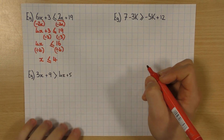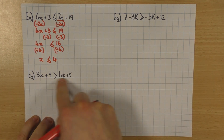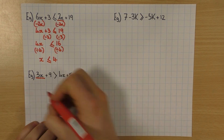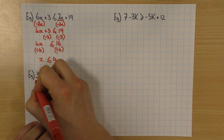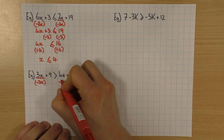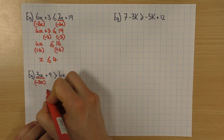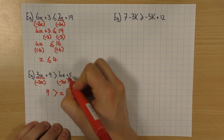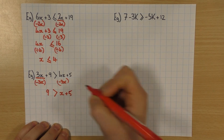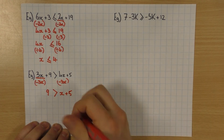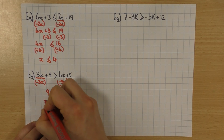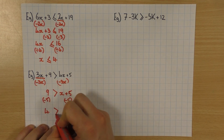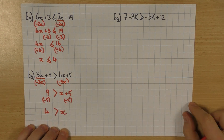The process is still exactly the same for these two. So 3x and 4x on both sides — get rid of the smaller one. 3 is the smaller one here, so I'm going to minus 3x. I'll have 9, inequality symbol stays the same, 4x take away 3x is just x, and then plus 5. I want to get rid of that plus 5, so I'm going to minus 5 from both sides. 9 take away 5 is 4, inequality sign stays the same, and of course I'm left with x.